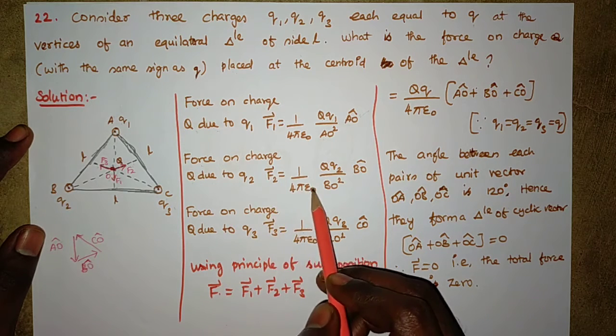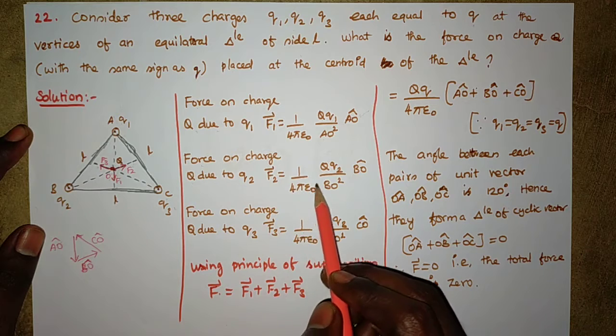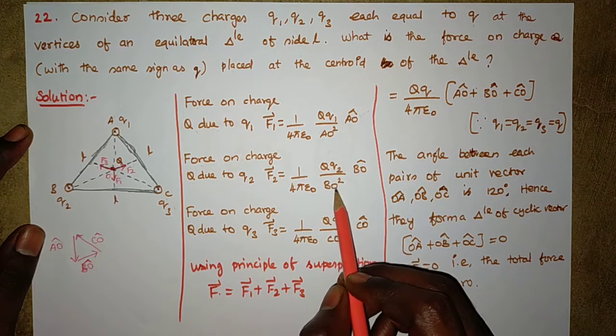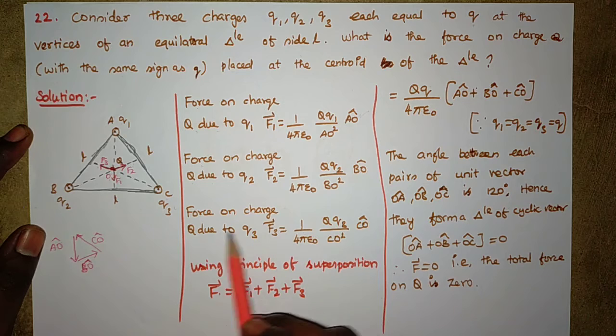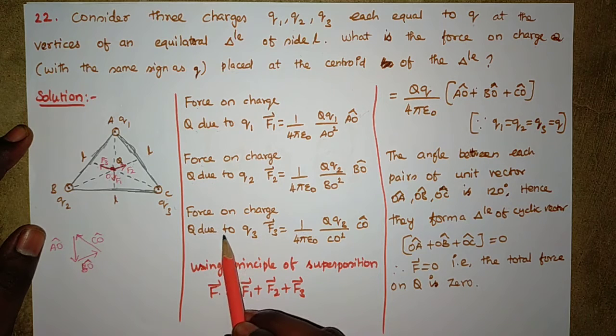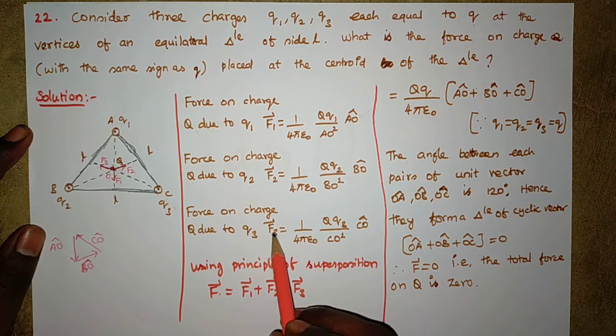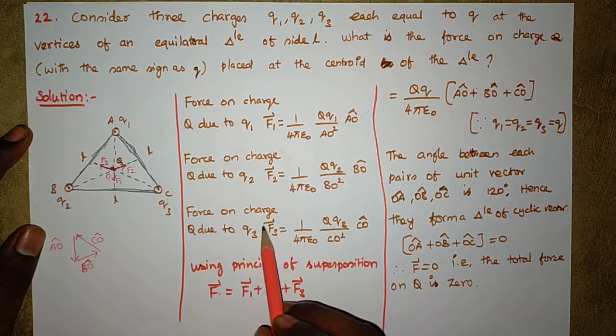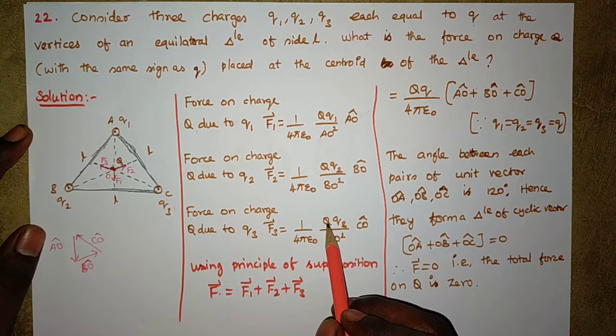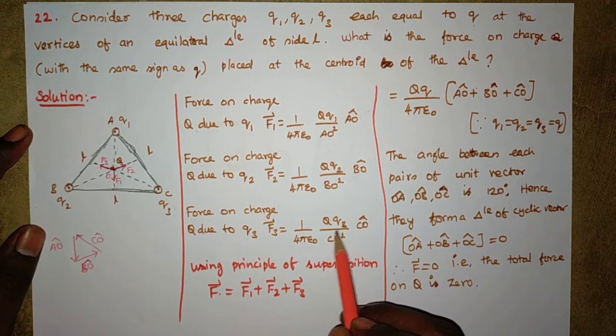F2 vector is equal to 1 divided by 4π epsilon not times capital Q times small q2 divided by OB squared times OB cap. Then force on charge capital Q due to small q3, F3 vector is equal to 1 divided by 4π epsilon not times capital Q times small q3 divided by OC squared times OC cap.